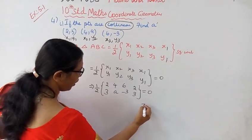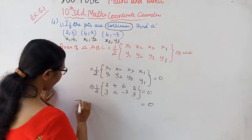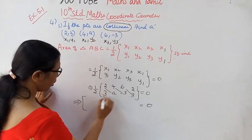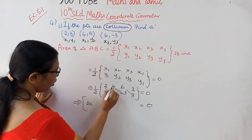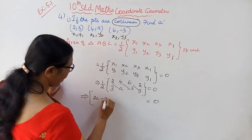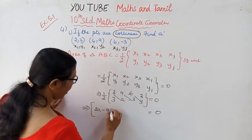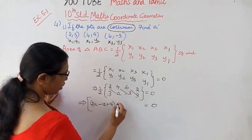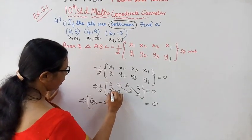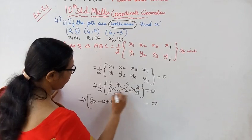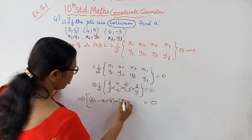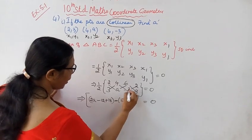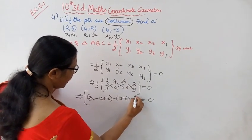2 into A minus (-3) gives 2A; 4 into minus 3 gives minus 12; 6 into 3 gives plus 18. Then downward: 3 into 4 gives 12; A into 6 gives 6A; minus 3 into 2 gives minus 6.